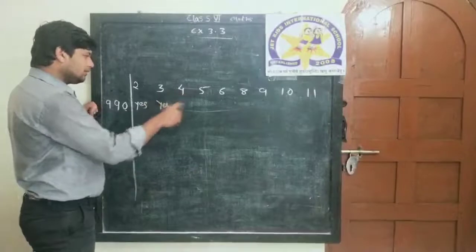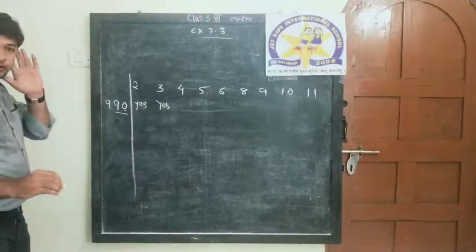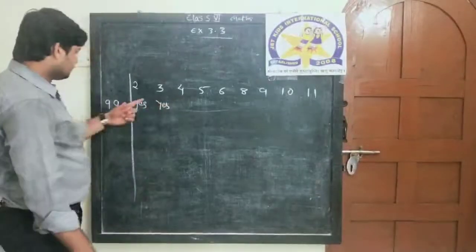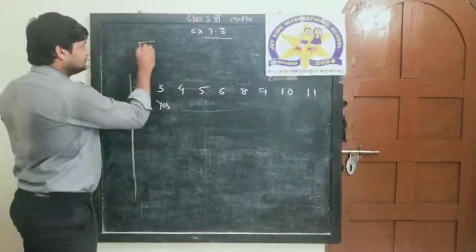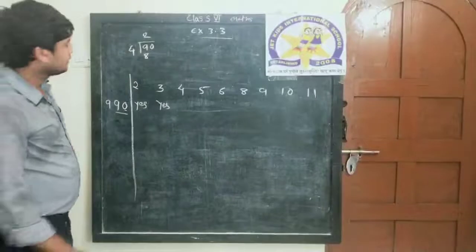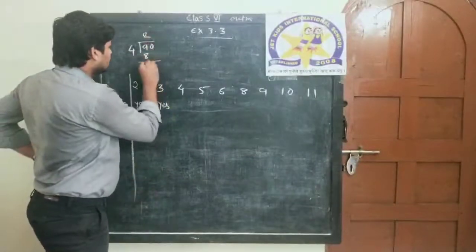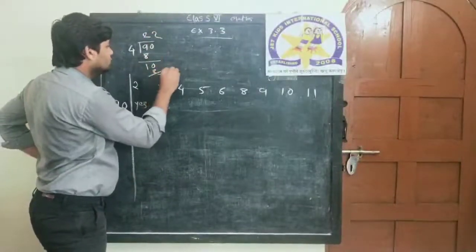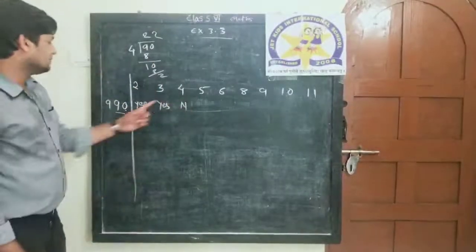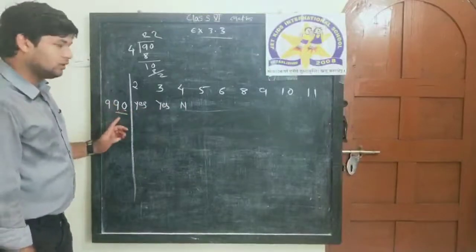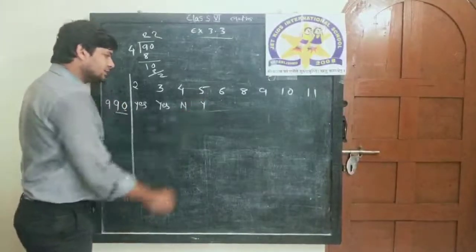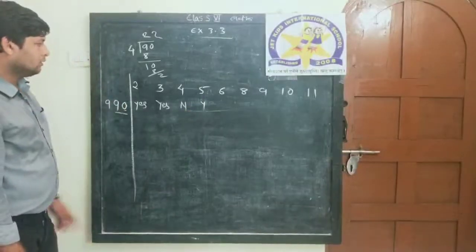Is 990 divisible by 4? Check the last two digits: 90 divided by 4 gives a remainder of 2, so no, it is not exactly divisible by 4. Is it divisible by 5? Yes — the unit digit is 0, and if the unit digit is 0 or 5, it is divisible by 5.